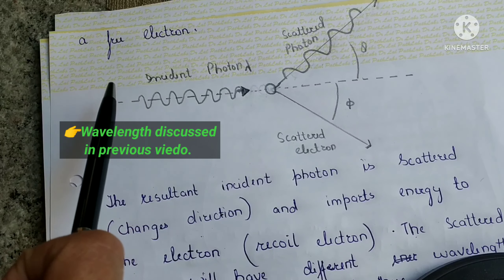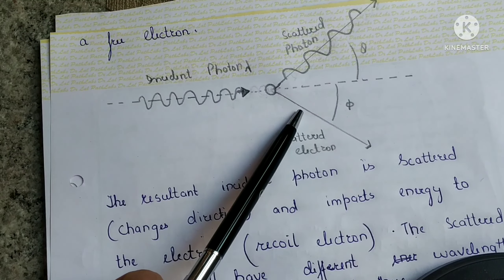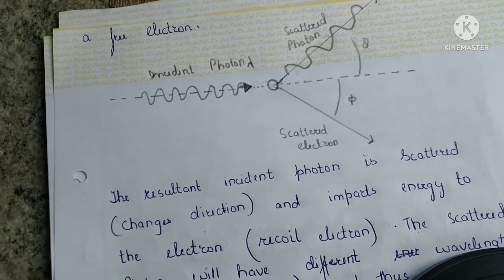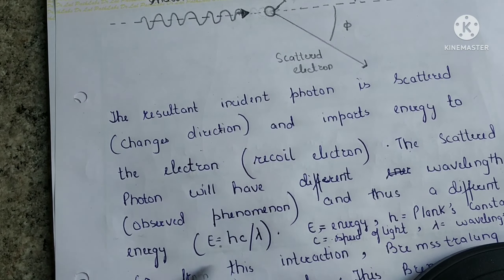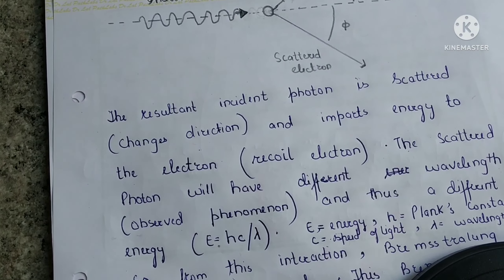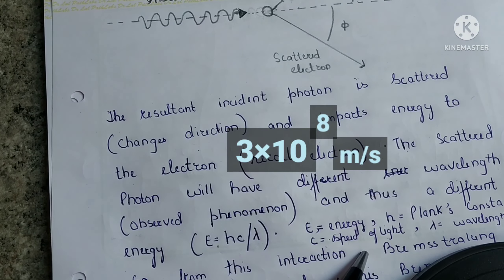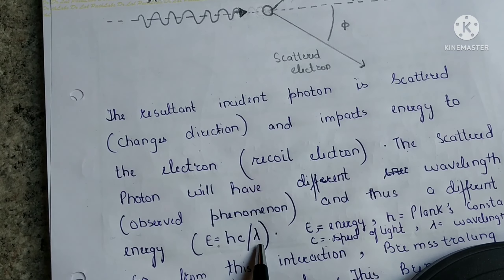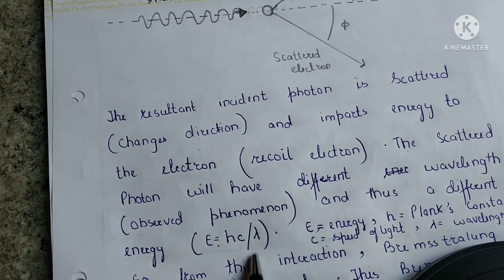Whenever there is a short wavelength there is high energy, and whenever there is a long wavelength the energy is less. Here is the equation of energy: Energy is equivalent to h times c divided by wavelength. Here h is Planck's constant, c is the speed of light which is 3 × 10⁸ meters per second, and the symbol λ is called wavelength. So energy equals Planck's constant times speed of light divided by wavelength.